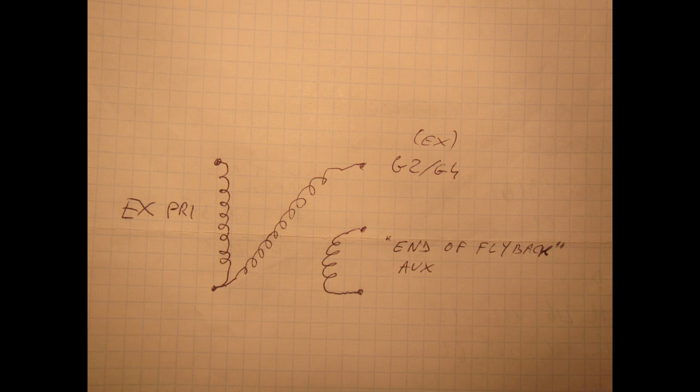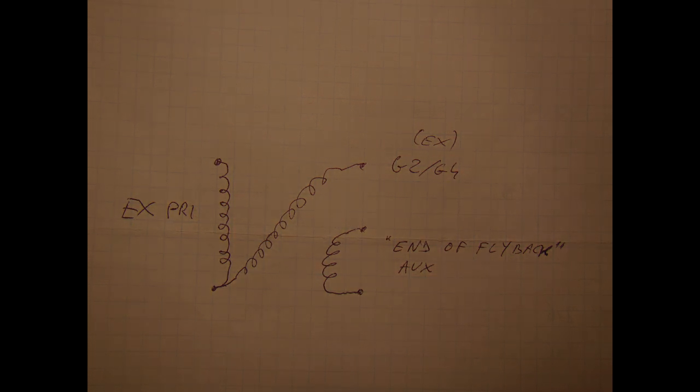So now I can use the old primary and the old G2 and G4 winding for my secondary supplies. Notice that the old primary and the grid secondary have one end in common. Then there is a low voltage secondary that was used by the horizontal controller integrated circuit to sense the end of flyback. So probably I won't use this low voltage secondary.